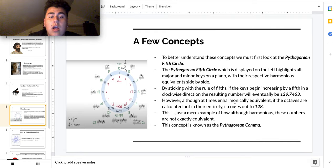However, when rotating in a counterclockwise position or way, when you count the octaves, you are then going to end up getting 128 instead of 129.7463. This is just a mere example of how, although harmonious, these numbers are not exactly equivalent. This concept is known as the Pythagorean comma.